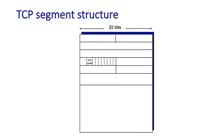Let's take a look at the TCP segment structure. There are a lot of fields here, but the key thing to keep in mind is not just what the fields are, but why those fields are there. In all of these cases, we'll see from what we've learned about the principles of reliable data transfer that we'll be able to understand why TCP has these fields.